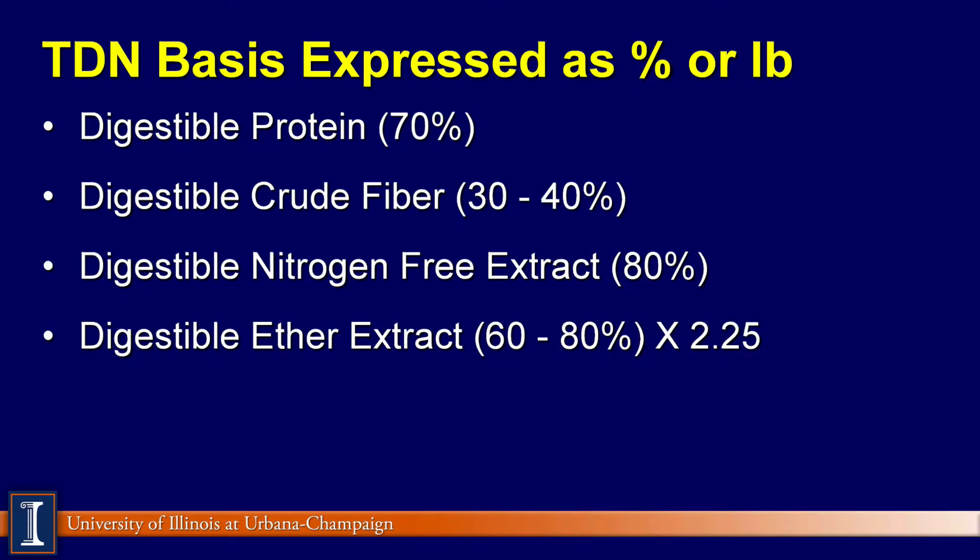Let's look at different ways to express energy content in a diet. The traditional way was called TDN, Total Digestible Nutrients. This measurement was expressed as a percent — for example, 70% TDN on a ration — or as pounds; for example, 'I feed my cows 20 pounds of TDN.' Either reference can be used.